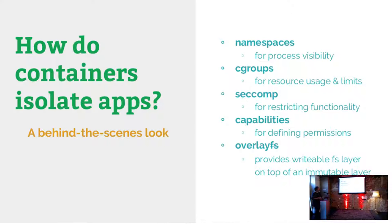Namespaces are for process visibility. If you're running a process in a network namespace, that process only has the view of that network namespace. If you're running in a mount namespace, it only has the view of the mounts it's able to see. This is the visibility portion. Then you have cgroups, which are made for managing resources and limits. Then you have things like seccomp - you can restrict functionality by specifying which system calls are not allowed to be called.